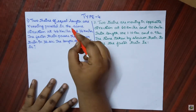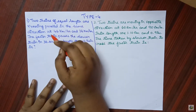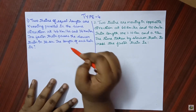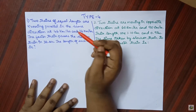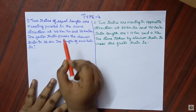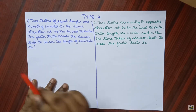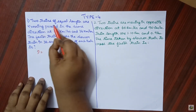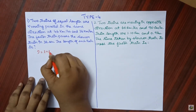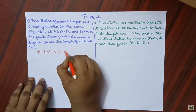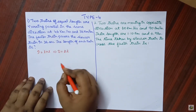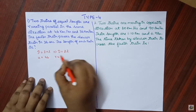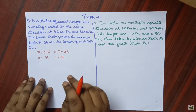Two trains of equal length are running parallel in the same direction at 46 kilometers per hour and 36 kilometers per hour. The faster train passes the slower train in 36 seconds. We have to find the length of each train. Since the trains are of equal length, the distance covered is L plus L, which equals 2L. The speed of the first train U is 46 km/h and the second train V is 36 km/h, both moving in the same direction.